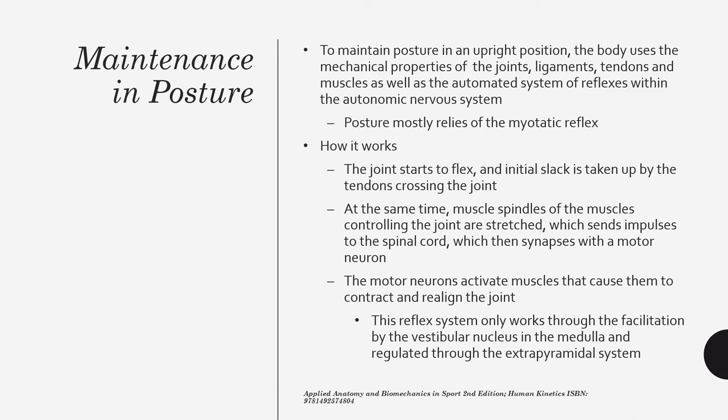To maintain our upright posture, the body uses mechanical properties of joints, ligaments, and tendons, as well as muscles, and these interact with the nervous system in the form of a reflex. This means posture mostly relies on reflexes — particularly our myotatic reflex.